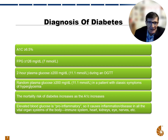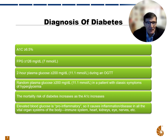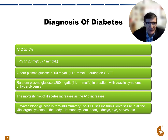So what's the diagnosis of diabetes mellitus? That would be an A1c greater than 6.5%, or a fasting sugar higher than 126. You can also do a two-hour glucose test — if it's higher than 200 during an oral glucose tolerance test, that would give you a diagnosis of diabetes. A random plasma glucose greater than 200 in a patient with classic symptoms of hyperglycemia also gives you the diagnosis. The mortality risk of diabetes increases as the A1c increases, so if levels remain high, the risk remains high as well.